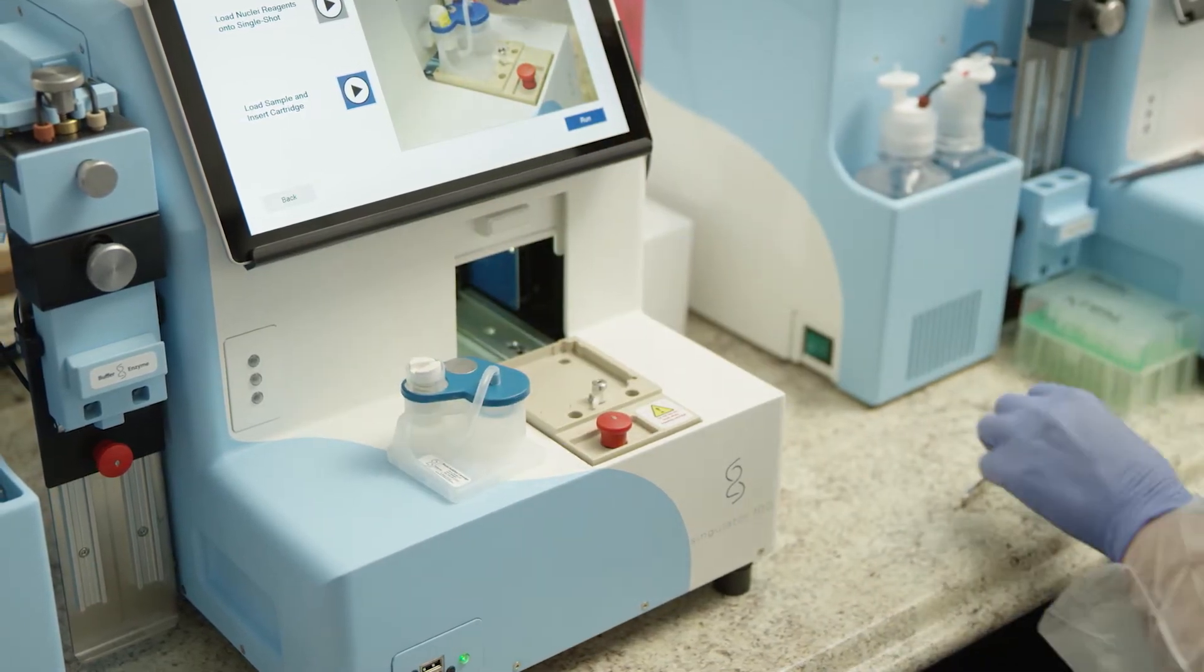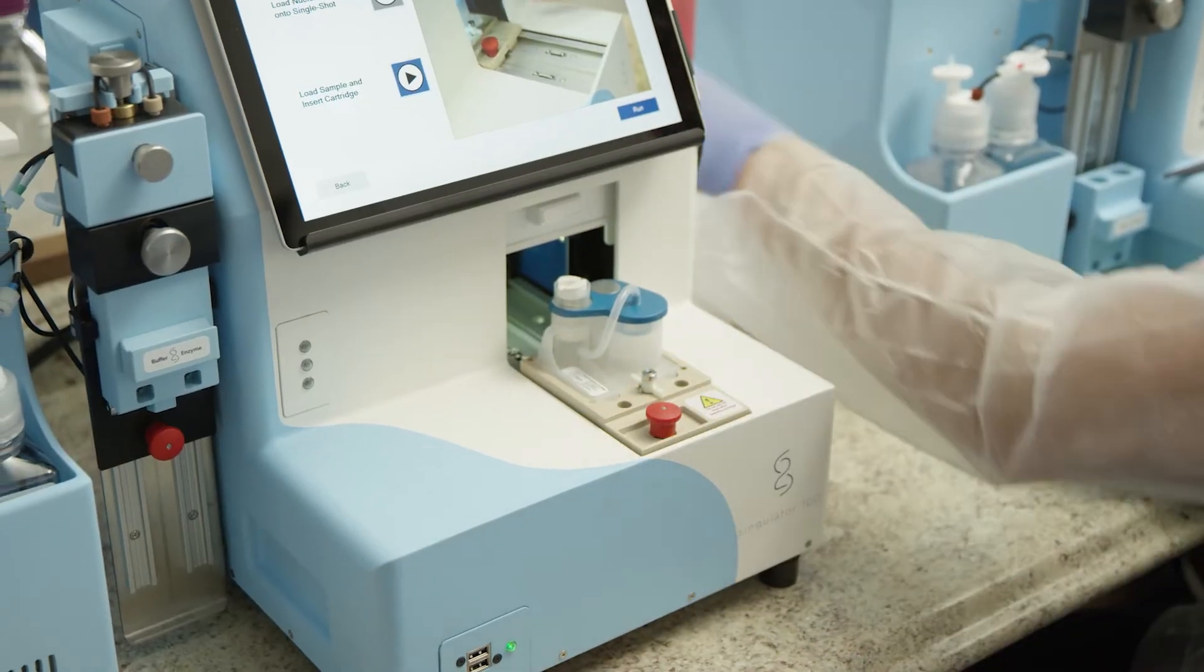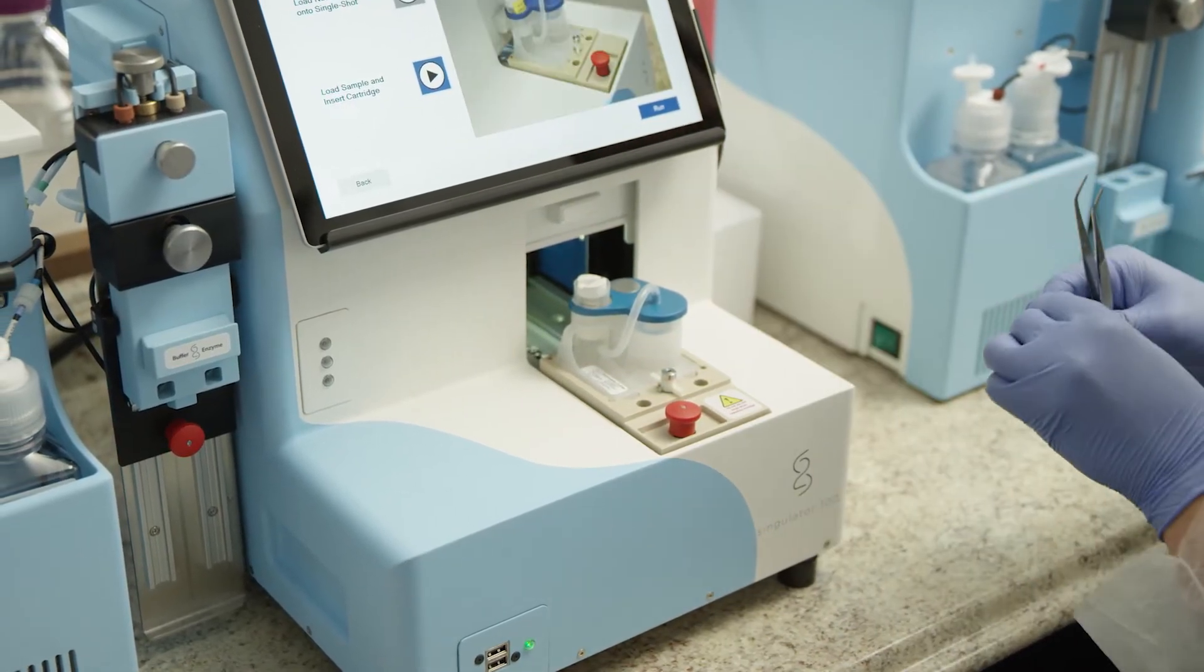Place a pre-cooled sample cartridge on the sample stage in the proper orientation so it sits flat on the stage. Rotate the cartridge lock to secure the cartridge in place.